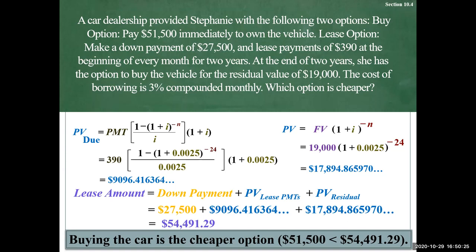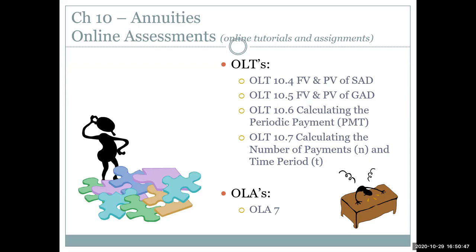These are just some examples for simple and general annuity dues. They work very similarly to ordinary annuities — simple ordinary or general ordinary. The key difference is where the payment is made and which formula is used.